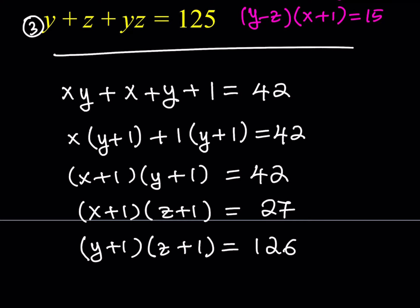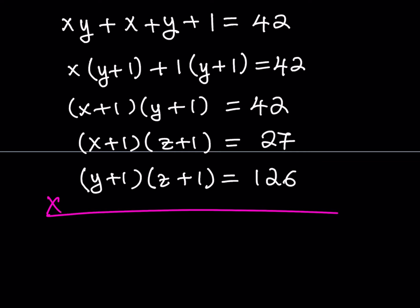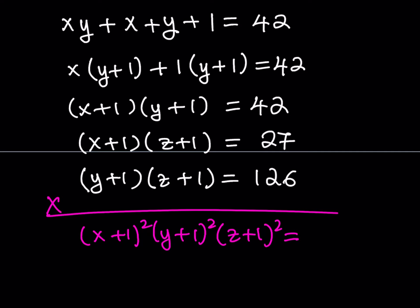Now here's what's beautiful: looking at these transformed equations, we see x plus 1 appears twice, y plus 1 appears twice, and z plus 1 appears twice. If you multiply all three equations together you get (x plus 1) squared times (y plus 1) squared times (z plus 1) squared on the left. I'll prime-factorize the right side: 42 is 2 times 3 times 7, so 42 equals 2 times 3 times 7; 27 is 3 cubed; and 126 is 2 times 3 squared times 7. So the right side becomes 2 squared times 3 to the sixth times 7 squared — a perfect square — which means we can take the square root of both sides.